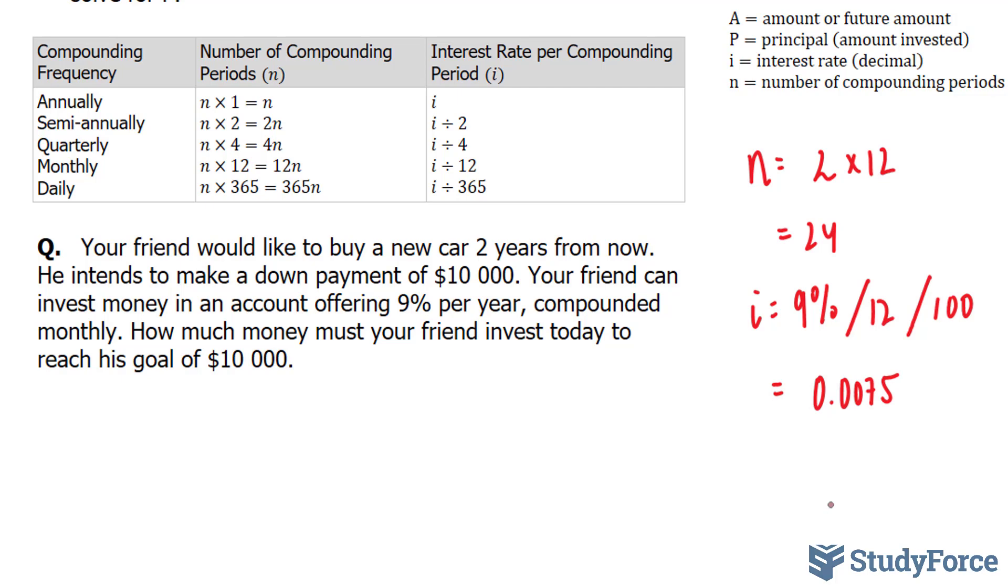So we found our N value. We found our I value. Now we need to assign the A value. And we know that the future amount of this car is going to be $10,000. So I'm going to write down A is equal to 10,000.